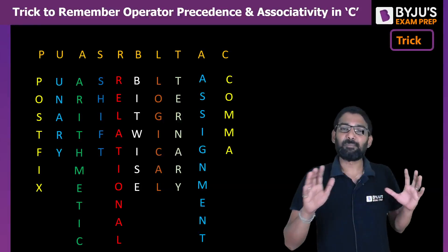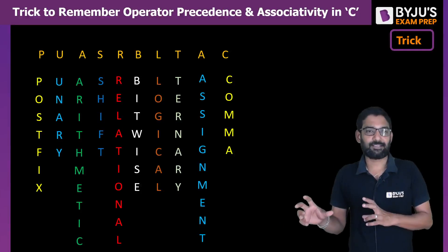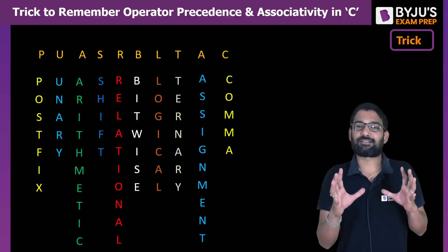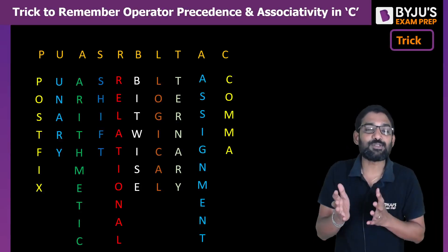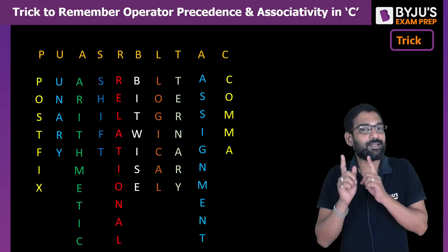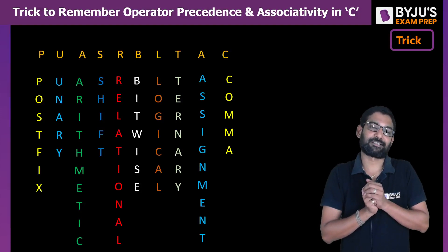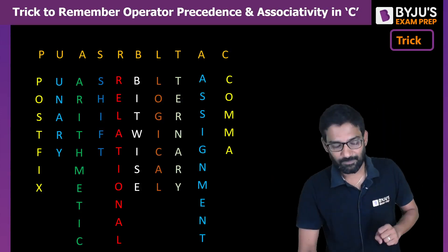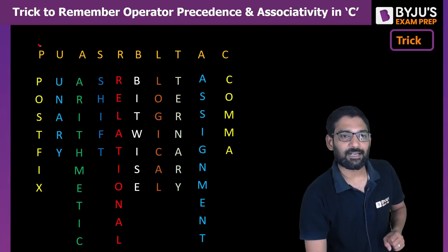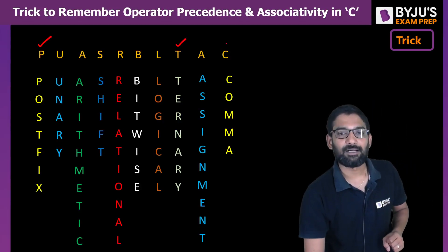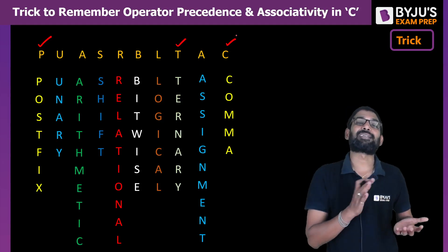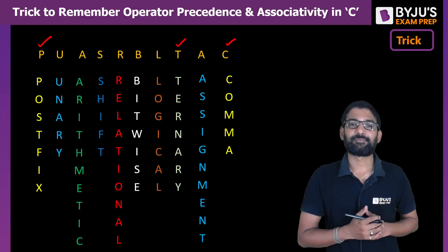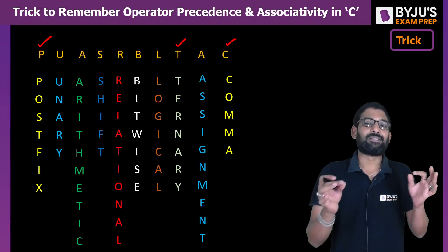With this simple mnemonic PUASRBL-TAC, you can remember the entire precedence table very easily. Now, regarding associativity: for postfix, ternary, and comma, the associativity is right to left. For all the others, it is left to right.